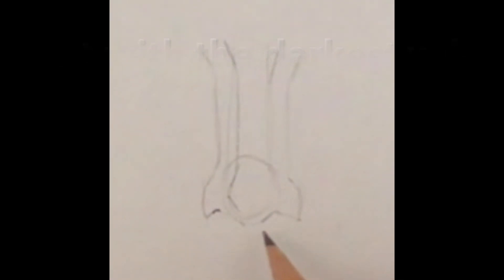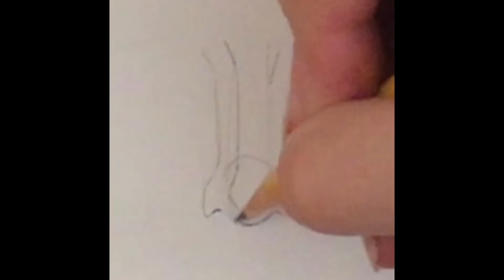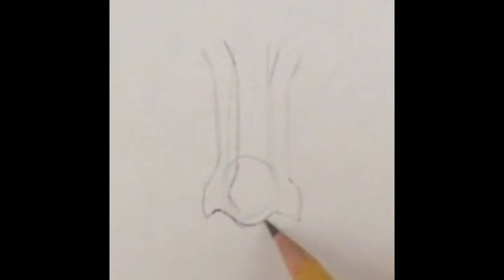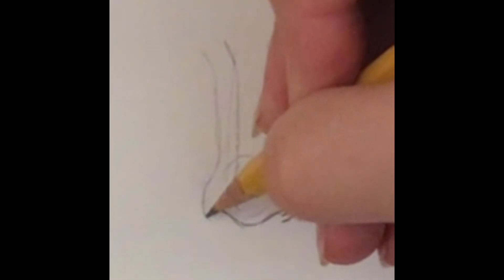I'm going to start with my darkest dark here at the nostrils and the bottom of the nose. Then I'm going to just do a little bit of shading and start to define my lines.